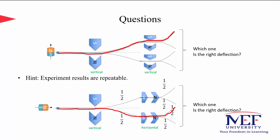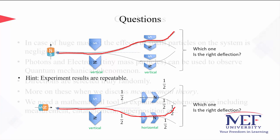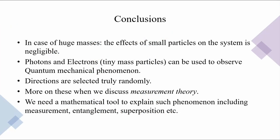If the magnetization direction were not 90 degrees, these probabilities would of course change — we will discuss that when we consider measurement theory in detail. To conclude today's lecture: in the case of large masses, the effects of small particles become negligible, so photons and electrons — tiny mass particles — can be used to observe quantum mechanical phenomena. Deflection directions are truly selected randomly. One of the most critical observations is that we need a mathematical tool to explain such phenomena, including measurement, entanglement, and superpositions, to better explain the nature of tiny particles.